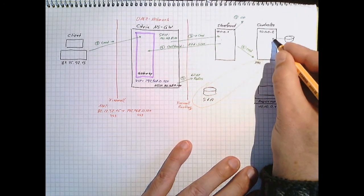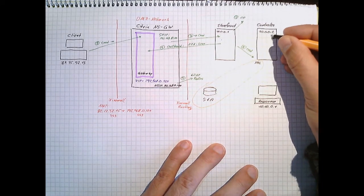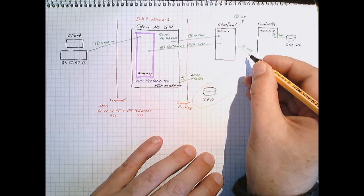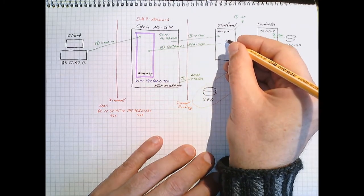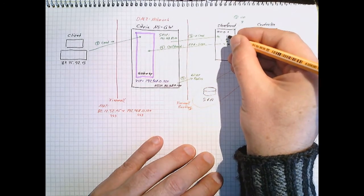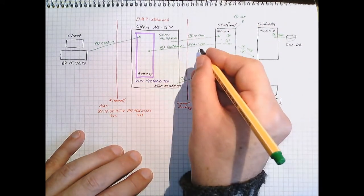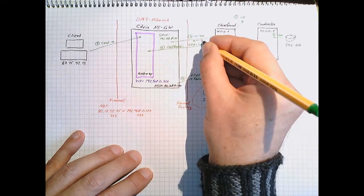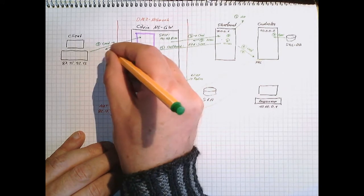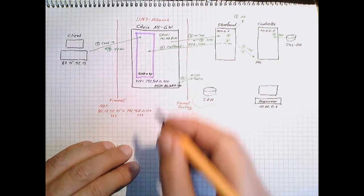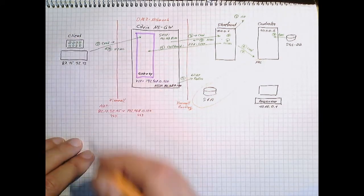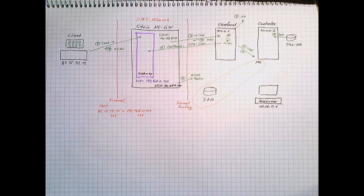The controller will load all the applications from database, the user-specific applications. This is number seven. These credentials are passed to Storefront. Storefront will create an HTML page for the user and forward this via NetScaler gateway to the user. And the user will now see the applications. So phase one is finished.